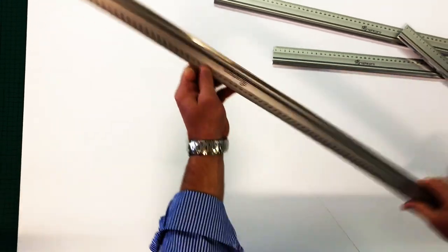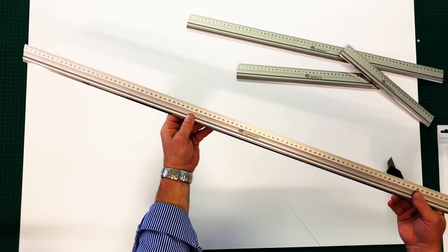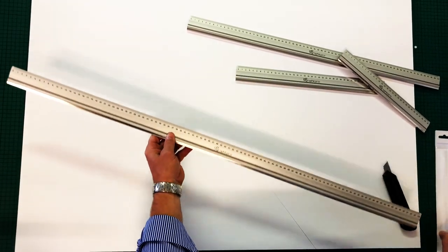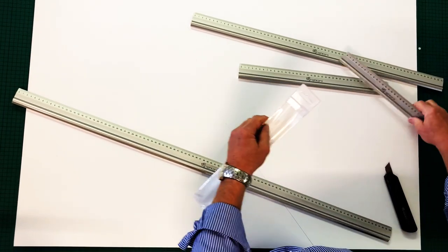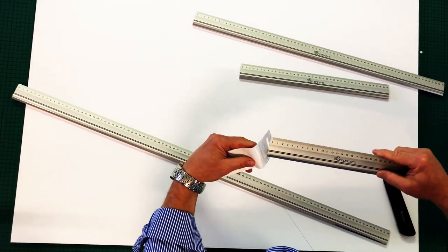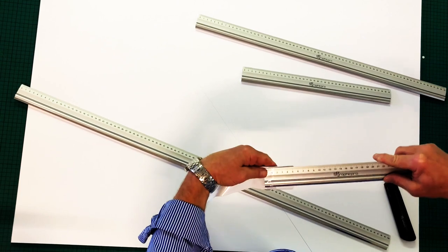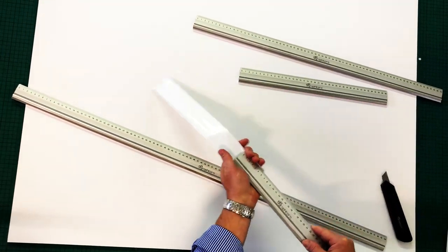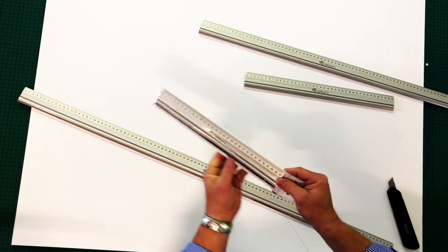So a great range again from Graphic Pro. Three sizes, four sizes available, and they all come in their own little plastic sleeve as well. So this will protect your ruler when you're not using it. And then just simply slide into the sleeve like so.